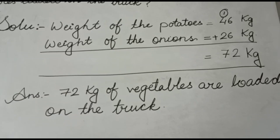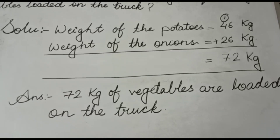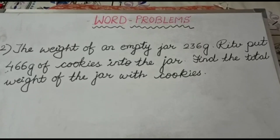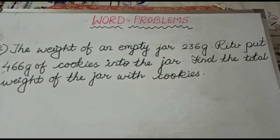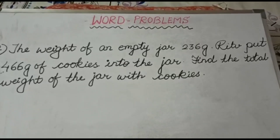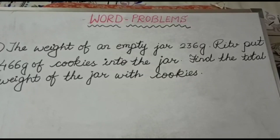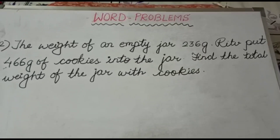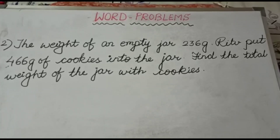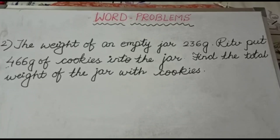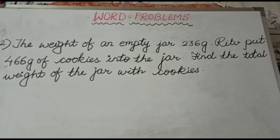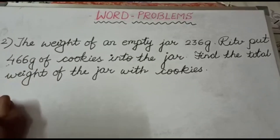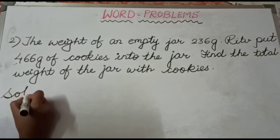Now let us move to the next example. The weight of an empty jar is 236 grams. Ritu put 466 grams of cookies into the jar. Find the total weight of the jar with cookies. Now let us do the solution.